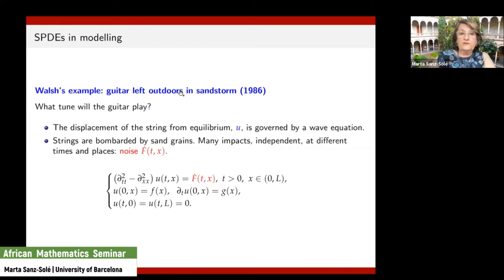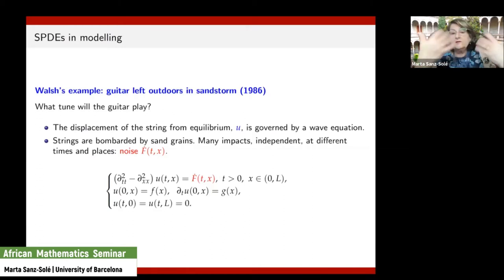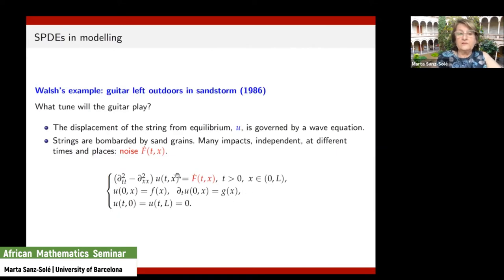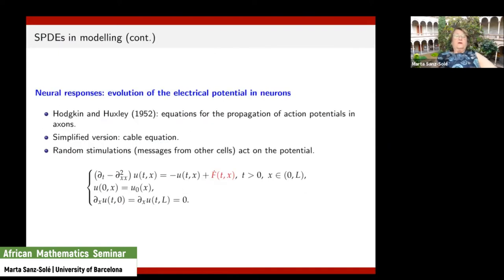This can apply to cables carrying signals, or similar systems. But in a sandstorm, the strings are bombarded by sand grains — they receive many impacts, independently, at different times and different places. To model the effect of this distortion of the displacement, we can use a noise term, leading to a modification of the deterministic wave equation into a stochastic wave equation.